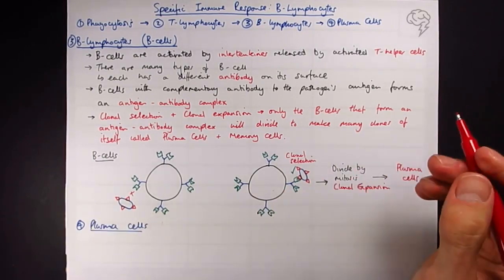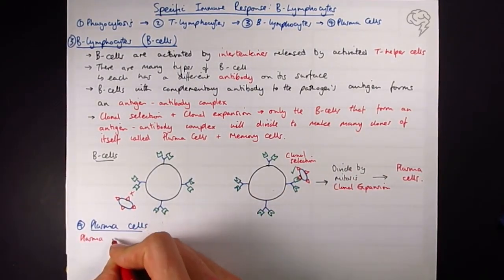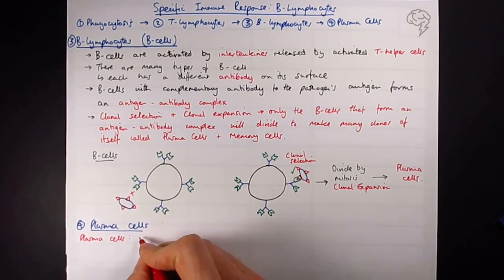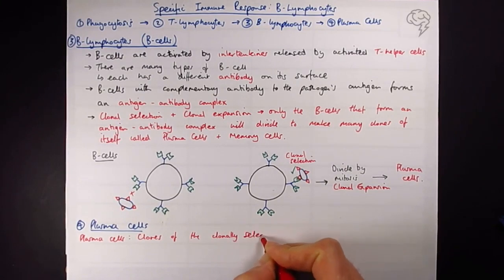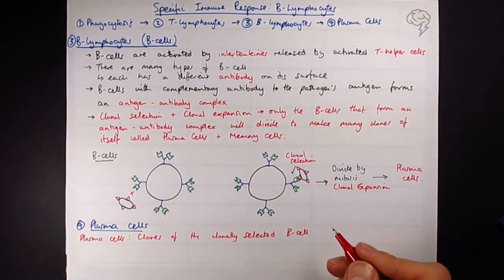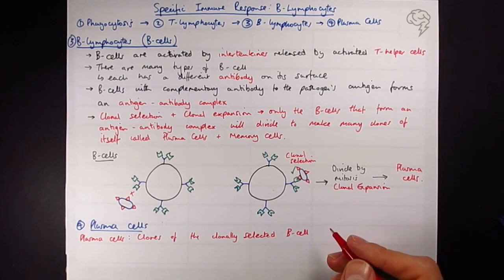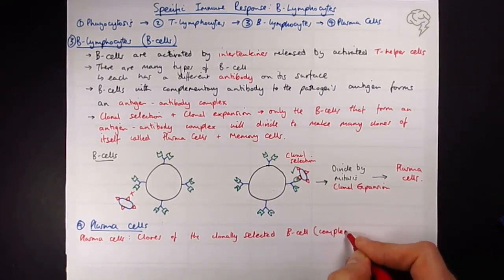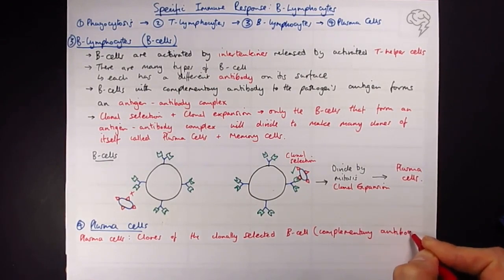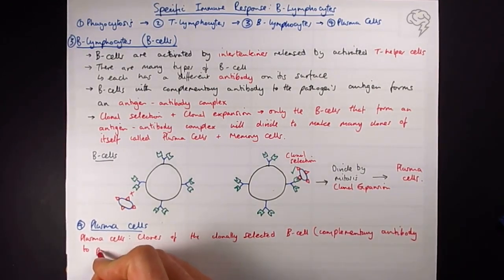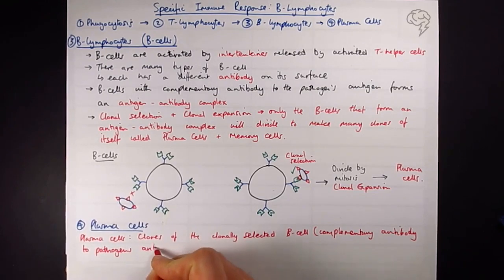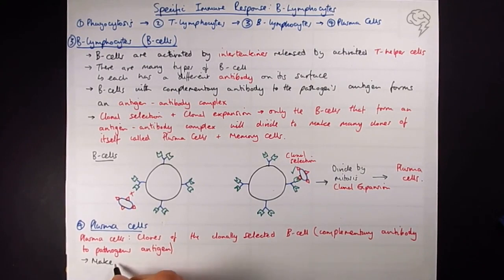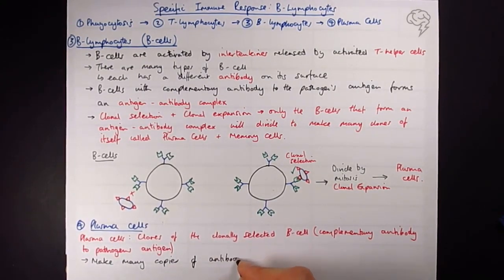So plasma cells, let's define them. We can say that plasma cells are clones of the clonally selected B cell, and obviously this is going to have the complementary antibody to the pathogen's antigen. So these guys are going to basically make many, many copies of antibodies that go into the bloodstream, and the antibody is then going to go and defeat the pathogen.